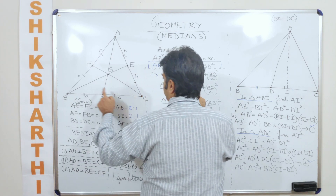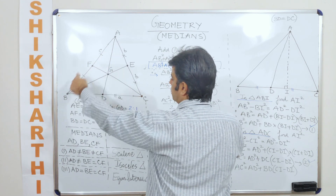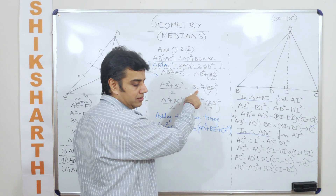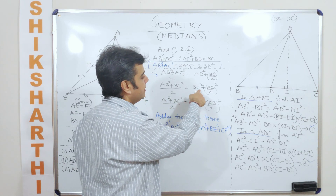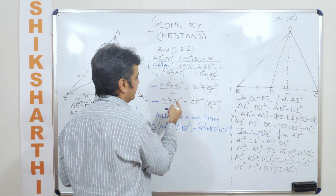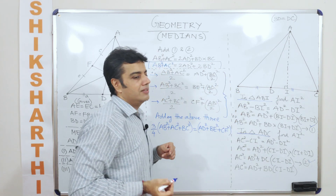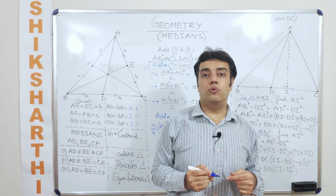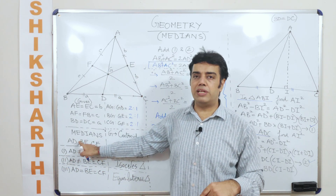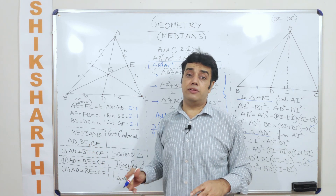Using the same analogy, I can establish a relationship for the other medians. For median BE, the sides included are BA and BC: (BA² + BC²)/2 = BE² + (AC/2)². Similarly, you can establish the formula for the third median CF. So now we know how to find the lengths of AD, BE, and CF.